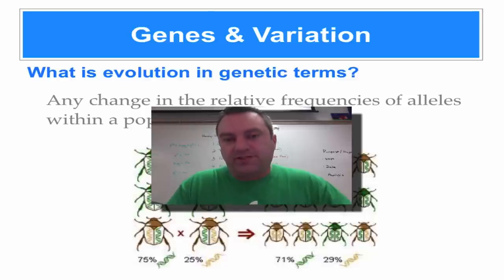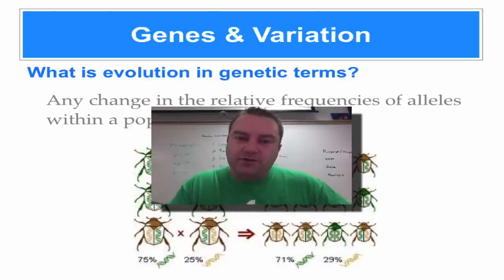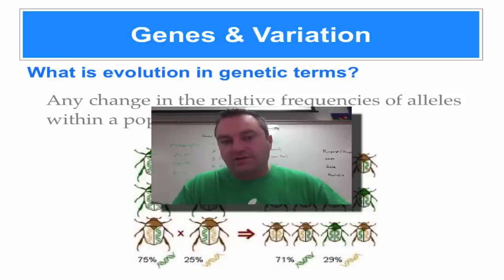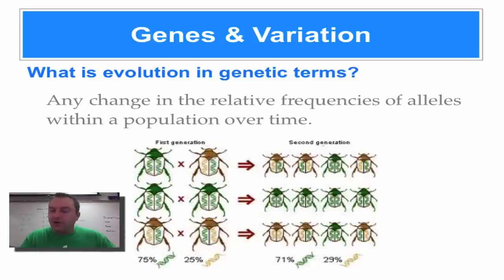Welcome to episode number two from the series on population genetics. In this episode we're going to deal with how genes become a phenotype and how variation in phenotypes and genotypes affect evolution. We're going to begin with a new definition of evolution, which is much more detailed than what we had from the previous series of screencasts on Darwin's theory.